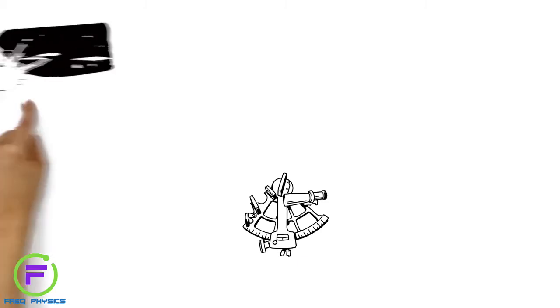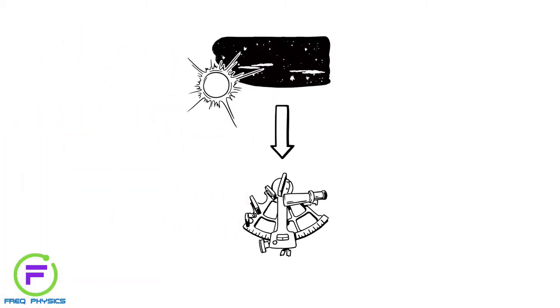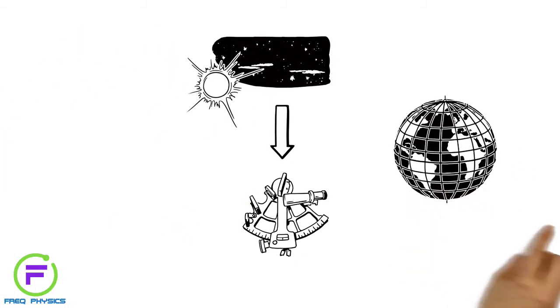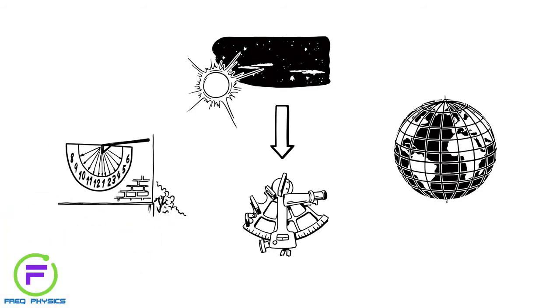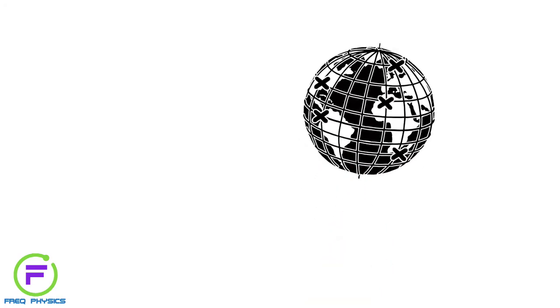The principle was that an object would be positioned above a certain point of latitude and longitude at a particular time of day. This made positioning possible. Now, every point on each line has its own number, known as a coordinate.